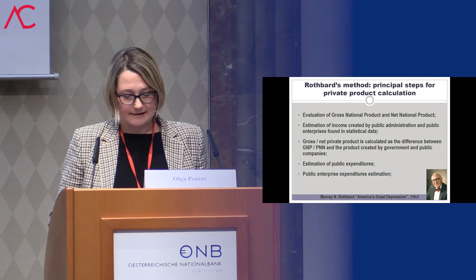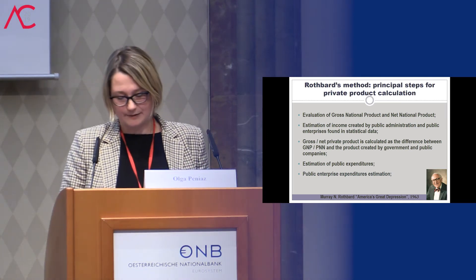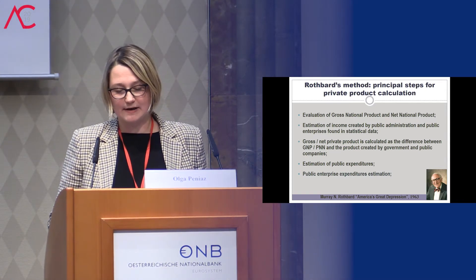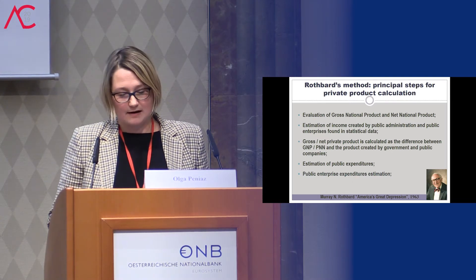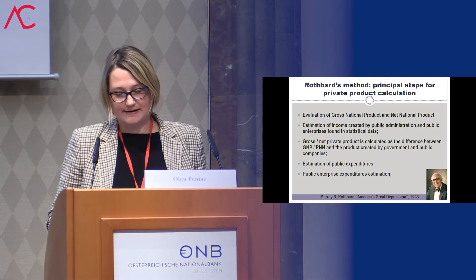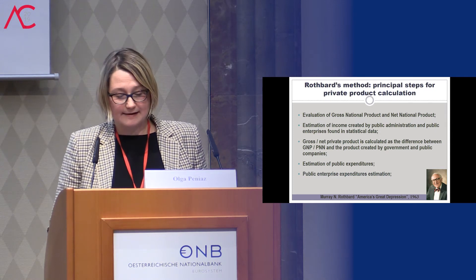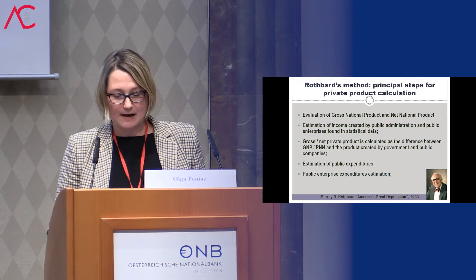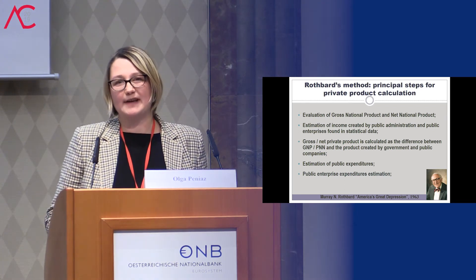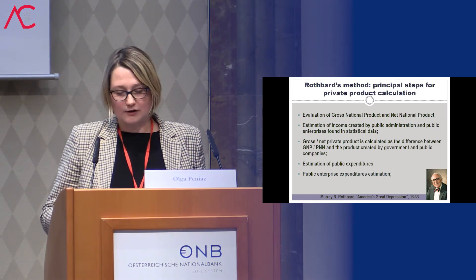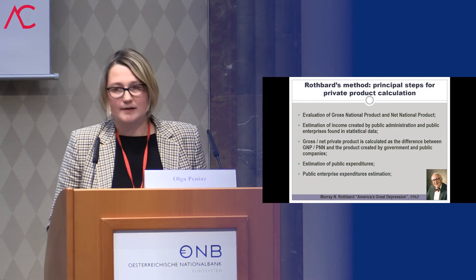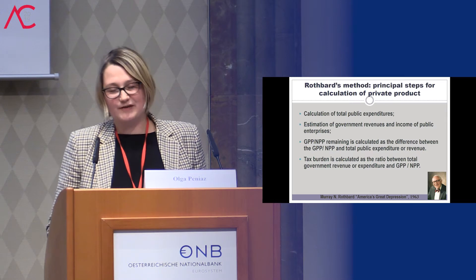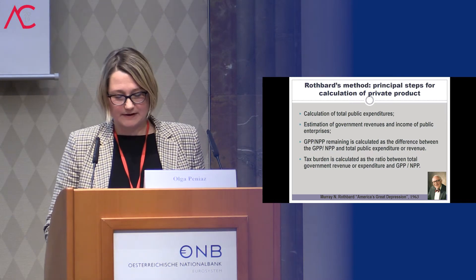Rothbard then estimates public expenditure of public enterprises, and also government revenues and income of public enterprises. He considers that income of public enterprises is equal to expenditure of public enterprises. He then calculates gross private product and net private product remaining in private hands as the difference between gross and net private product and total government expenditure or revenues if they are higher. A tax balance is calculated as the ratio between gross private product and government expenditure or revenues if they are higher.